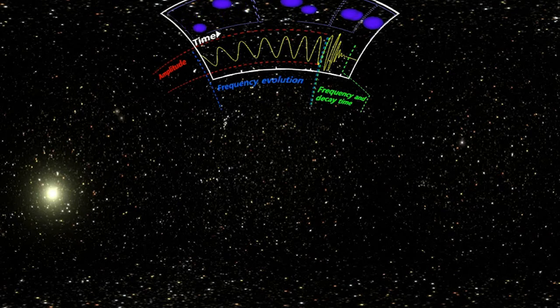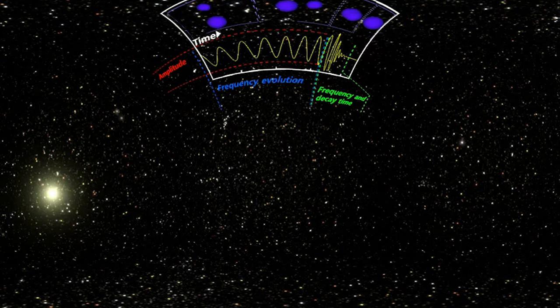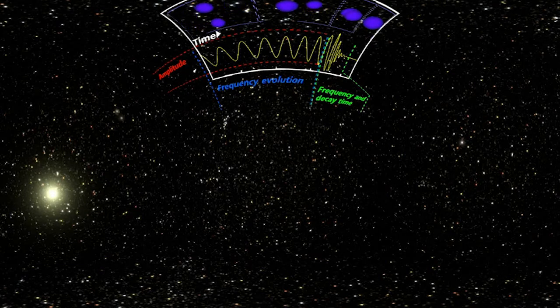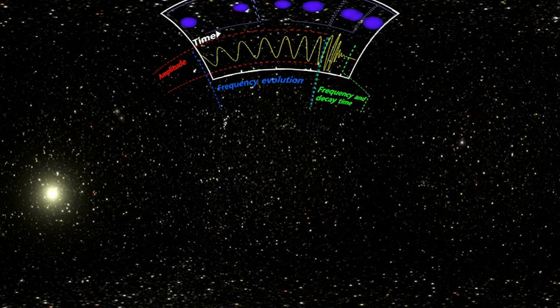We weren't expecting black holes to be heavy in that mass range. At the time that they actually collided, when they touched, they were whipping around each other at half the speed of light.